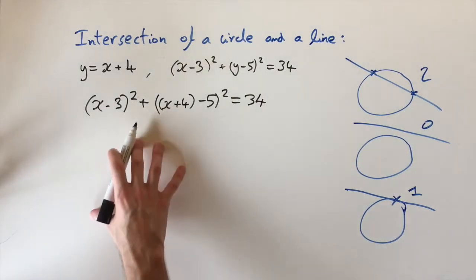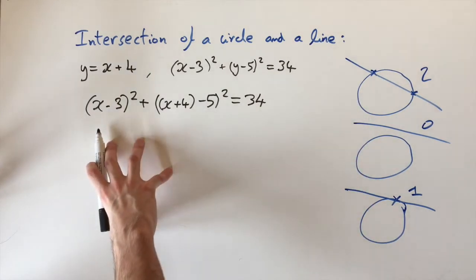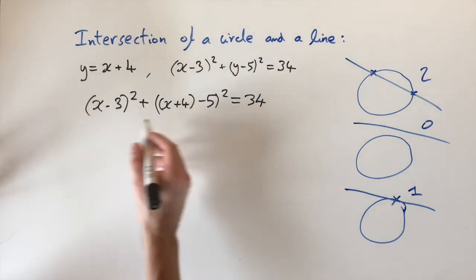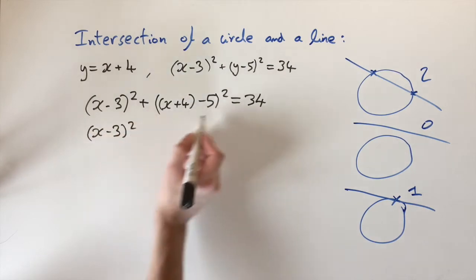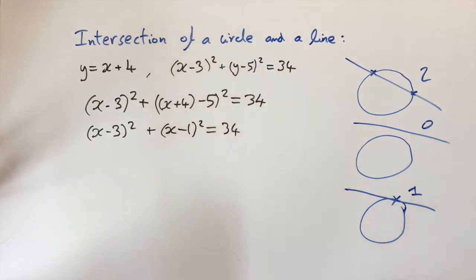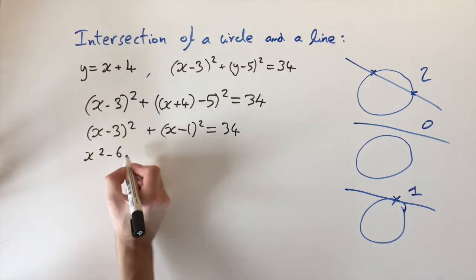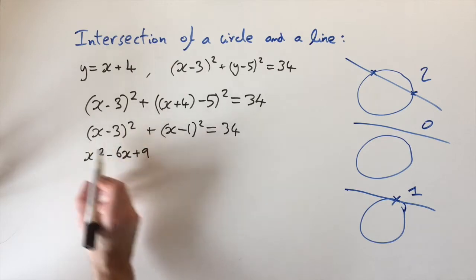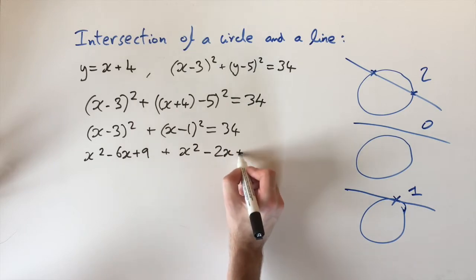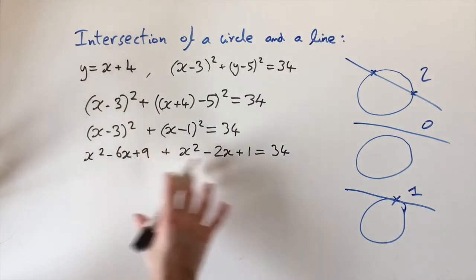This is actually going to be a quadratic equation, and so you can see why we can have 2, 0, or 1 solutions — that depends on how many solutions this quadratic has. So let's do the algebra. We have x minus 3 squared, and we can simplify the second bracket as x minus 1 squared, and this equals 34. Expanding: the first bracket gives x squared minus 6x plus 9, and the second bracket gives x squared minus 2x plus 1, still equals 34.